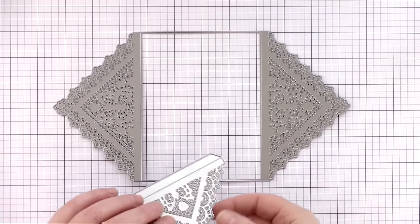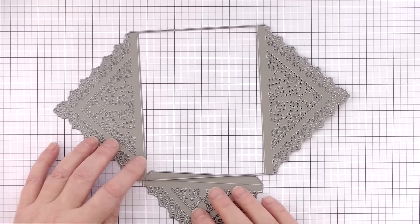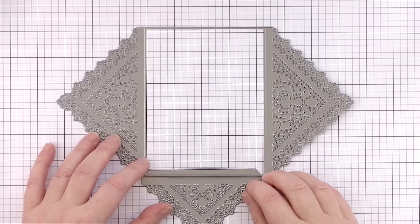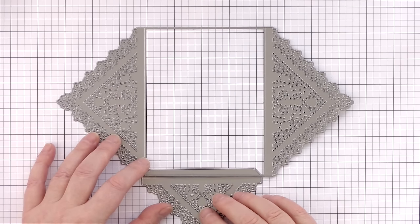The last of the dies I have to show you today is the Doily Envelope Die. It comes as two dies: a large die that cuts the main body of the envelope with the top and bottom flaps, and then a second die which cuts the side flaps of the envelope.